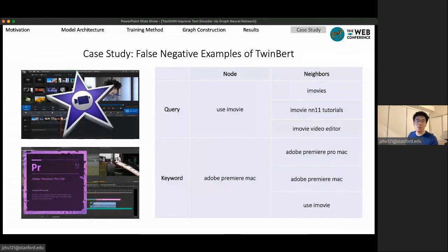Lastly, the second false negative one is an example of two video editing software as a Mac platform. Without the domain knowledge, it is impossible to conclude from the semantic meaning that Adobe Premiere Mac is a video editing software. However, since the query string is identified as a neighbor of the keyword, our graph model can use this information to find the correct information.